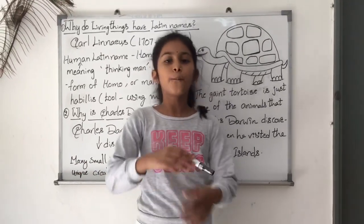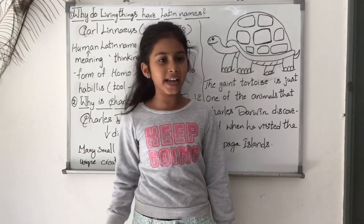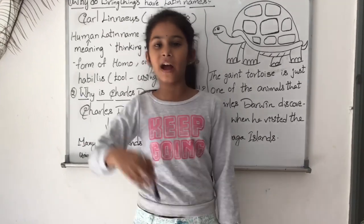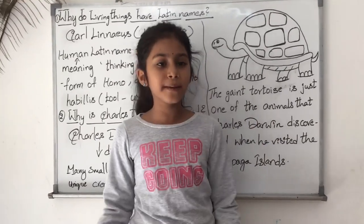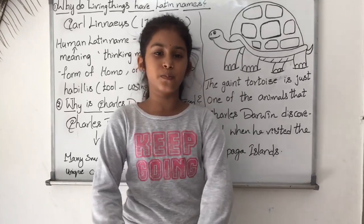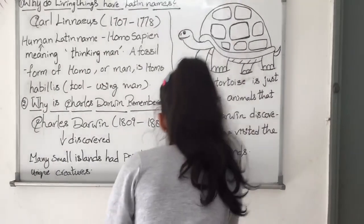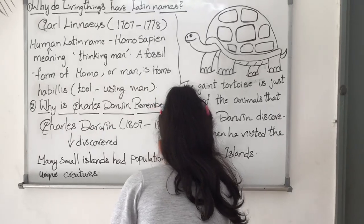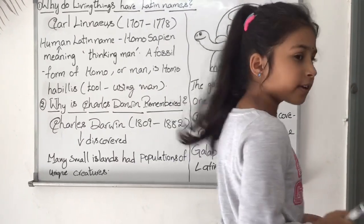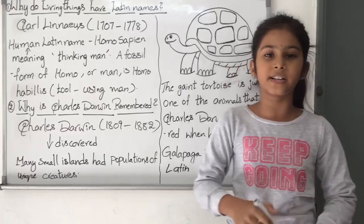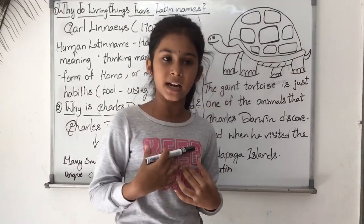Did you know most plants and animals have popular names that can vary from place to place? So a name needed to be given that would be recognized everywhere. It was decided to use Latin for the scientific names as it was the language used centuries ago by learned people.